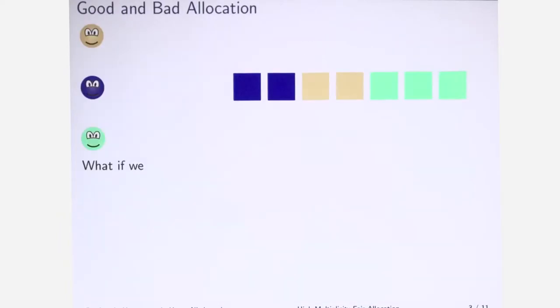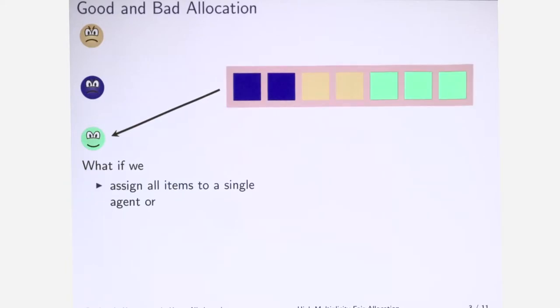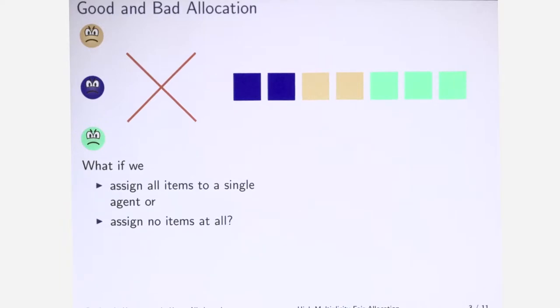So we can somehow assess the allocation. They can be good or bad. How do we do it? Well, a kind of intuitive description is: what if we just put everything to one agent? The other ones are unhappy, so we cannot consider it as a good allocation.